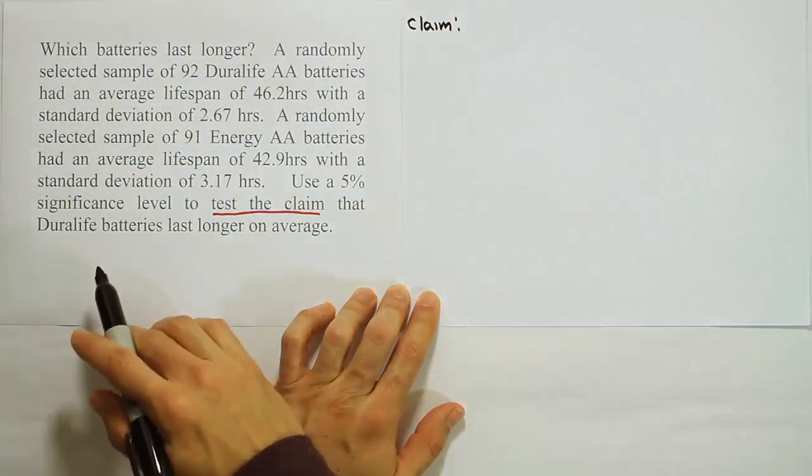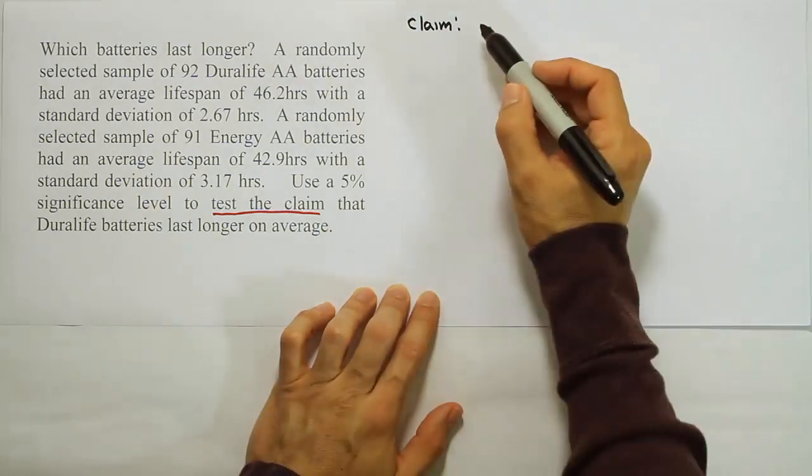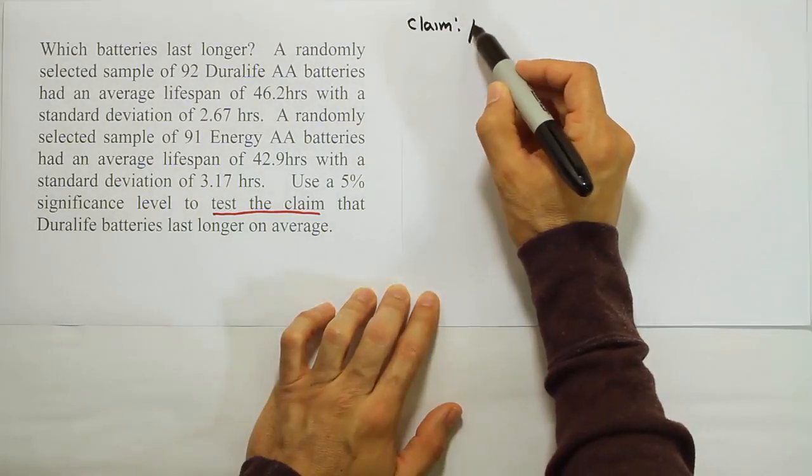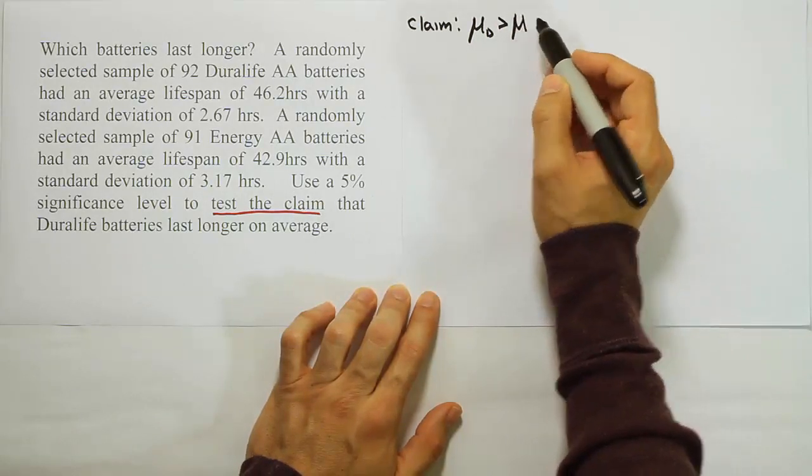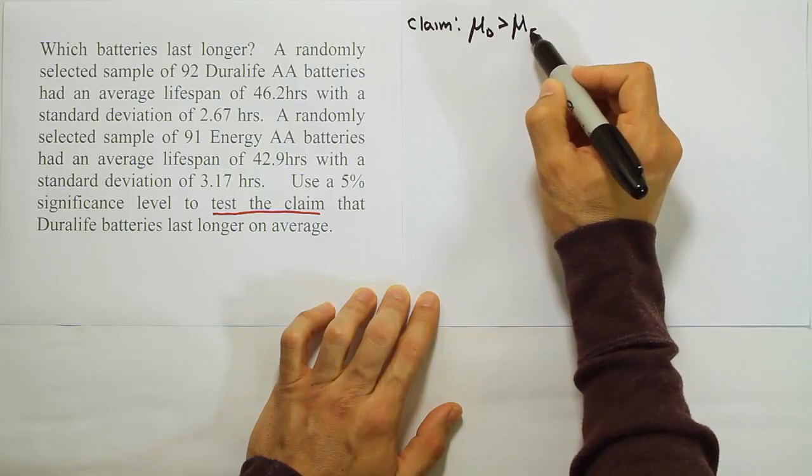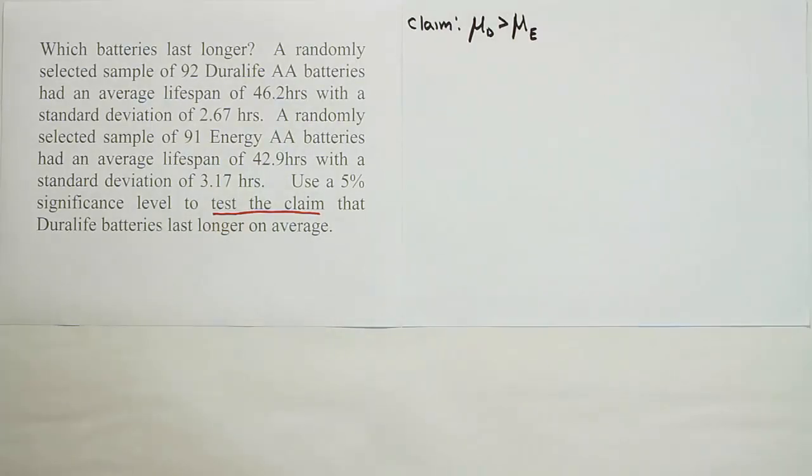For the claim we're saying Duralife batteries last longer. So we're going to say the mean lifetime for the Duralife batteries is greater than the mean lifetime for the energy batteries. That's our claim.